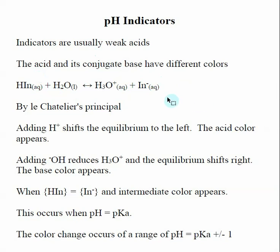If we have an indicator in a solution and we start adding H-plus in the form of acid, the equilibrium will shift to the left, and whatever the color of our indicator HIn is, that will appear. Likewise, if we start adding OH-minus, this is going to reduce the amount of hydronium, and by Le Chatelier's principle, this is going to cause our equilibrium to shift to the right, and so our solution will appear the color of whatever the conjugate base is.